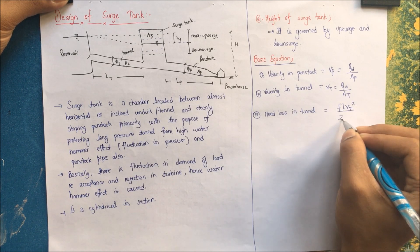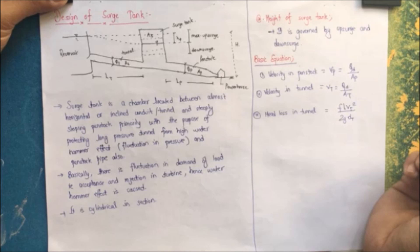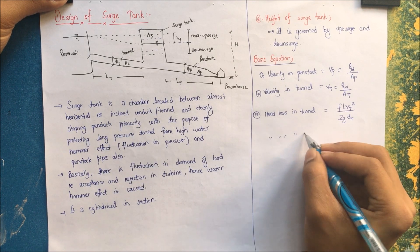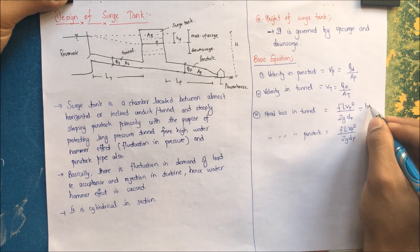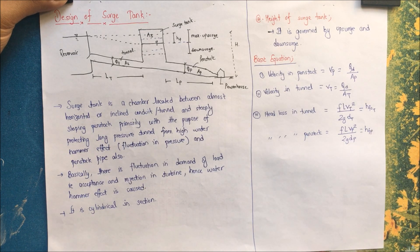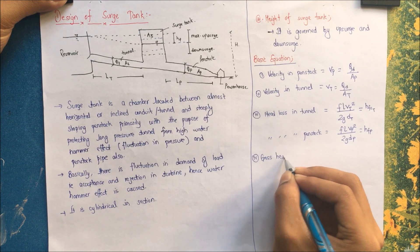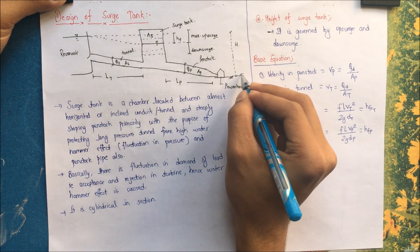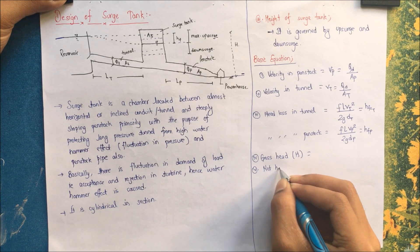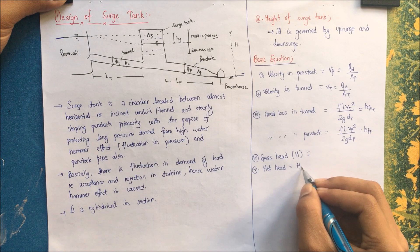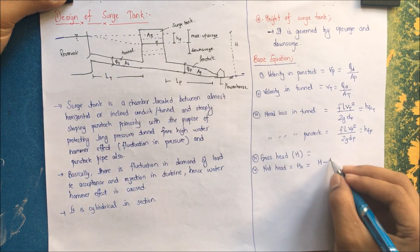Third, frictional head loss in tunnel: hft = f × L × Vt² / (2 × g × Dt), from fluid mechanics. Here f is the coefficient of friction, L is the length of conduit, Vt is the velocity in the tunnel, and Dt is the diameter of the tunnel. Similarly, head loss in penstock: hfp = f × L × Vp² / (2 × g × Dp). Step four: gross head H is the difference between the water level at the reservoir and the tailrace. Net head H₀ = H − hft − hfp.